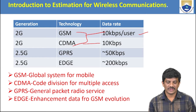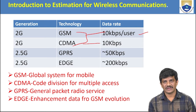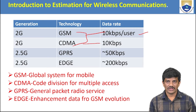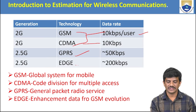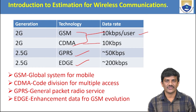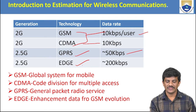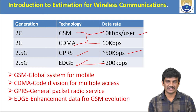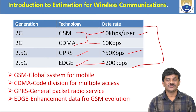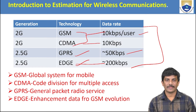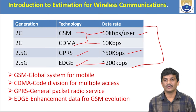Coming to 2.5G, we have advancement and improvement in data rate. Here we use GPRS (General Packet Radio Service) with approximately 50 kbps data rate, and EDGE (Enhancement Data for GSM Evolution) with approximately 200 kbps data rate. These are the differences between the second-generation technologies: GSM, CDMA, GPRS, and EDGE.